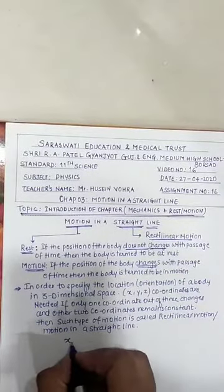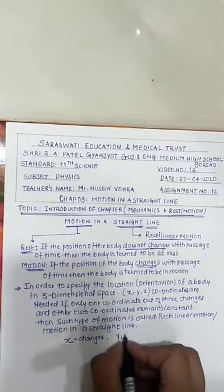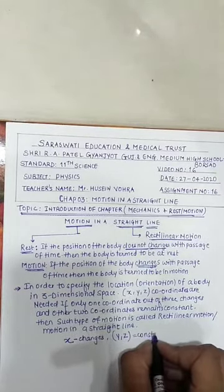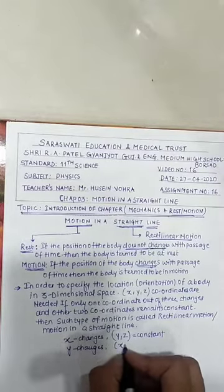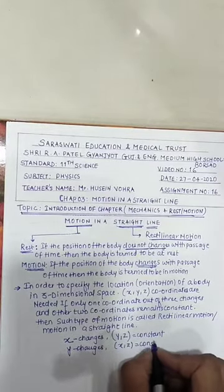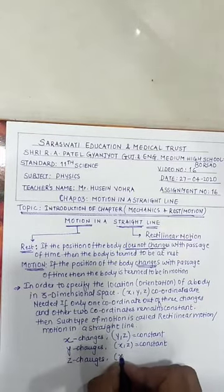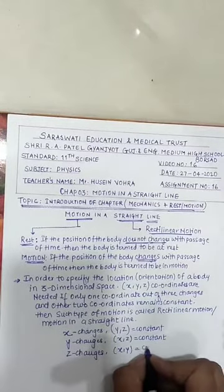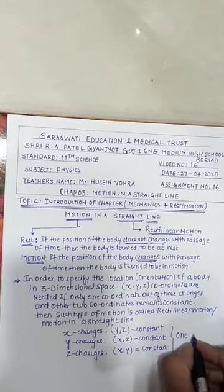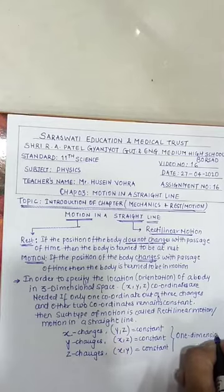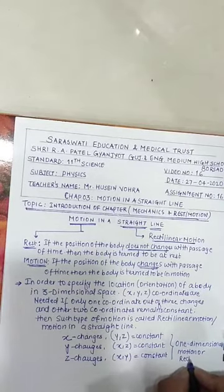For example, if X changes while Y and Z remain constant, or if Y changes while X and Z remain constant, or if Z changes while X and Y remain constant — all of these are examples of one-dimensional motion, also called rectilinear motion.